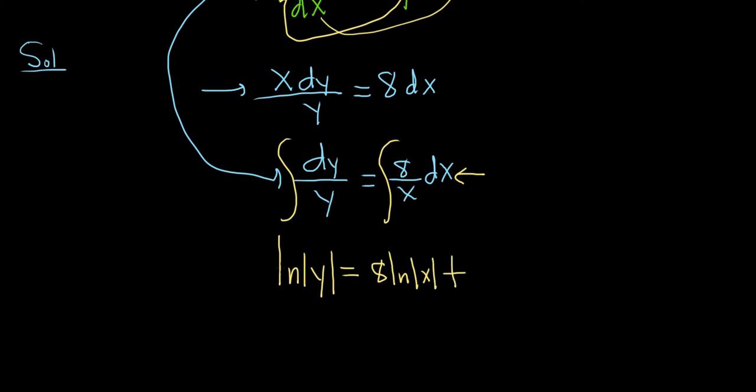Now, I'd like to go ahead and solve for y in this problem. And I see that the y is trapped inside this natural log. So I'm going to go ahead and not call it c. I'm going to call it c tilde. Because it's going to change throughout the process.